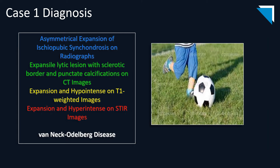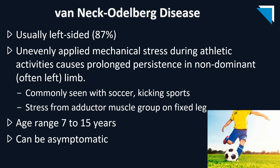The diagnosis is Van Neck-Aldenburg disease, or asymmetrical expansion of the ischiopubic synchondrosis. This is usually left-sided due to unevenly applied mechanical stress during athletic activities, causing prolonged persistence in the non-dominant, usually left limb. It's commonly seen with soccer or other kicking-related sports, due to stress from the adductor muscle group on the fixed leg. Patients usually present between the ages of 7 and 15, and some may be asymptomatic.